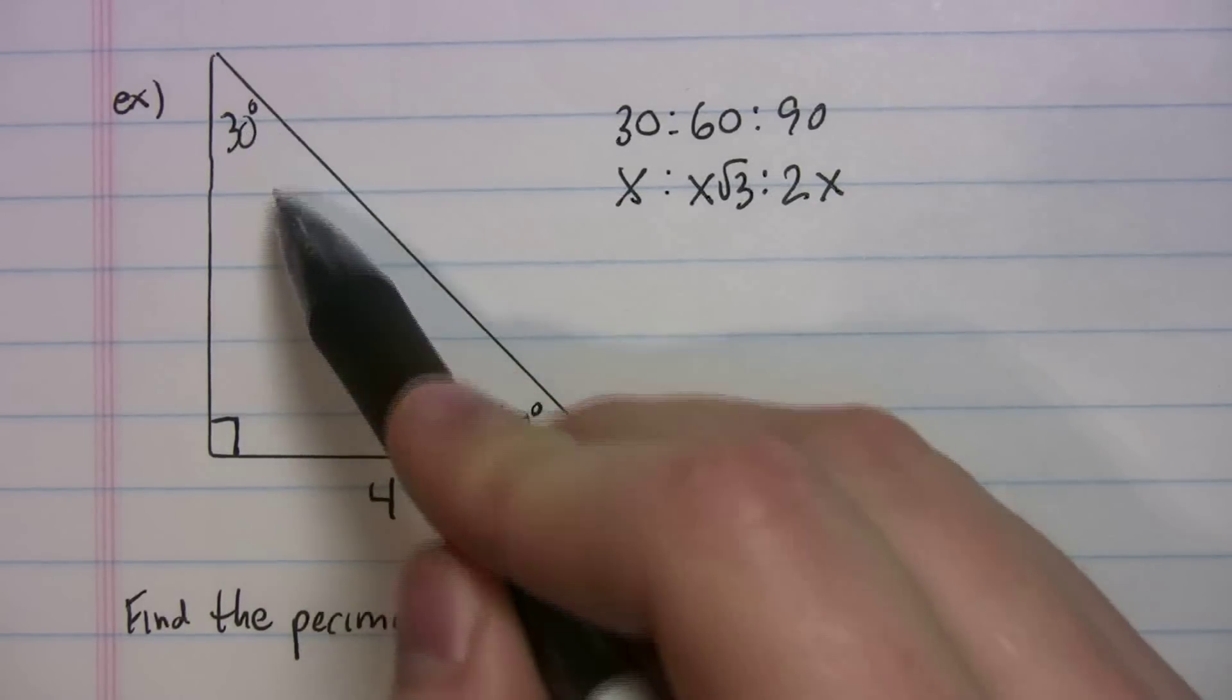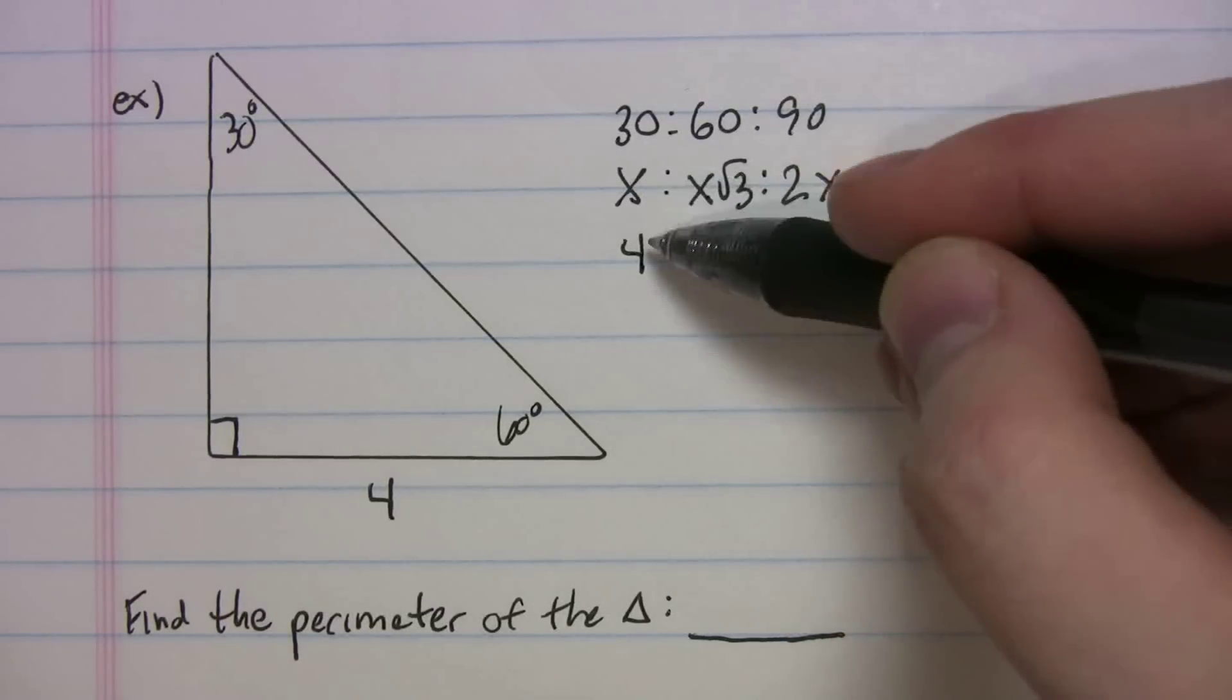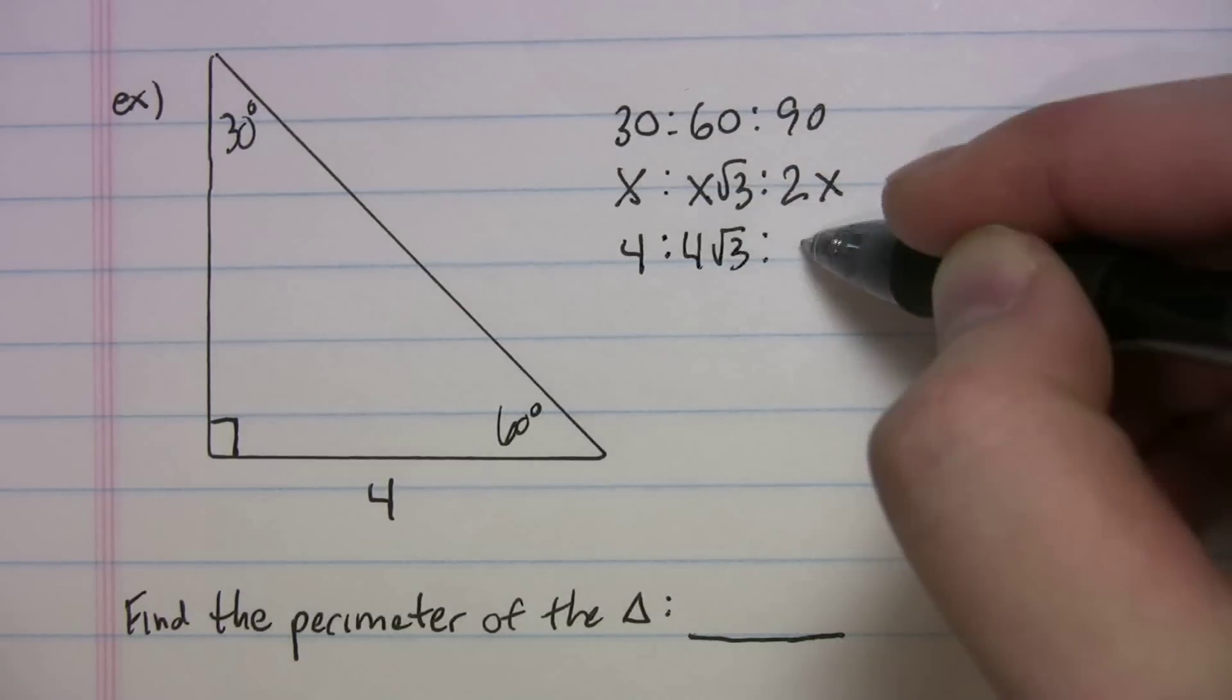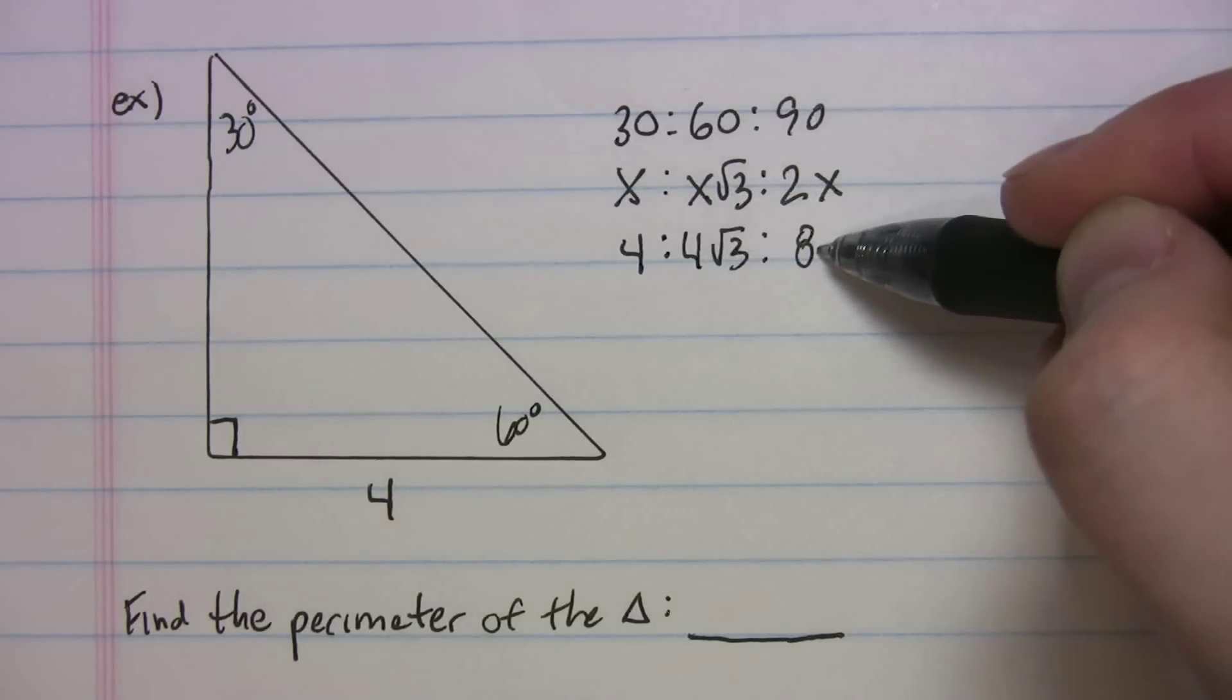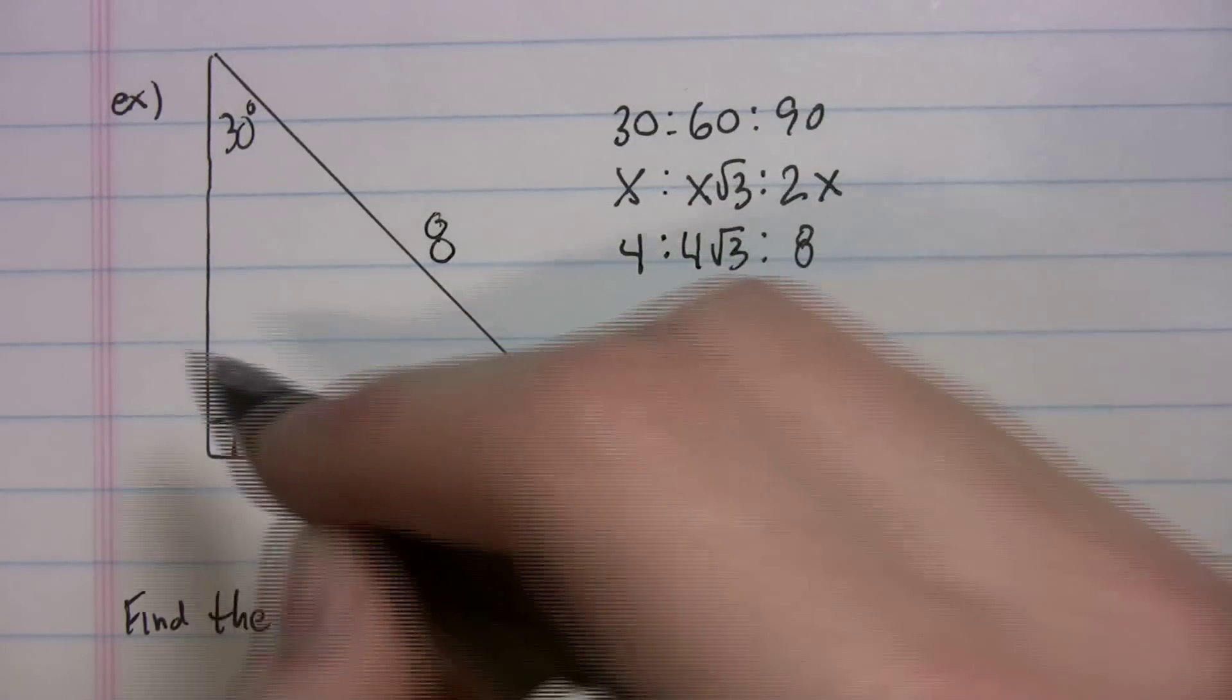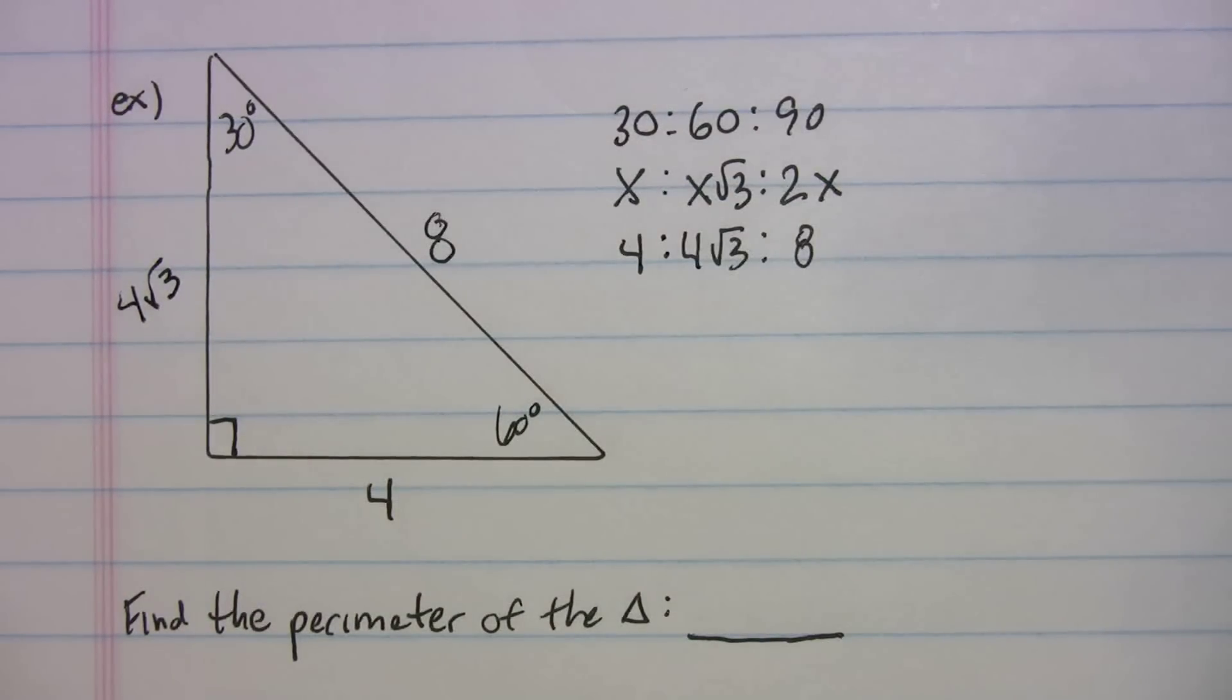So opposite 30 degrees, we have 4. Let's plug that in. So that means x equals 4. So opposite 60 will just be 4 radical 3. I'm just plugging in. 2 times 4 is 8. So let's put it in the sides. Opposite 90 will be 8. So the 8 goes there. Opposite 60 is 4 radical 3.